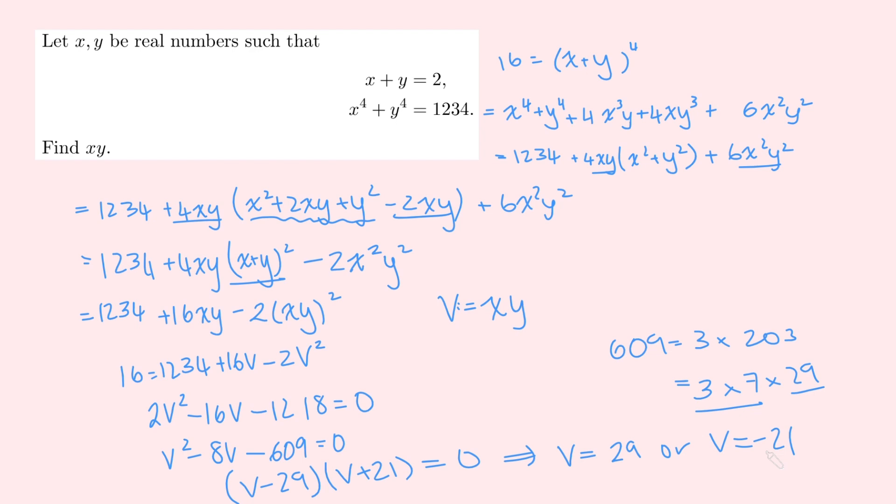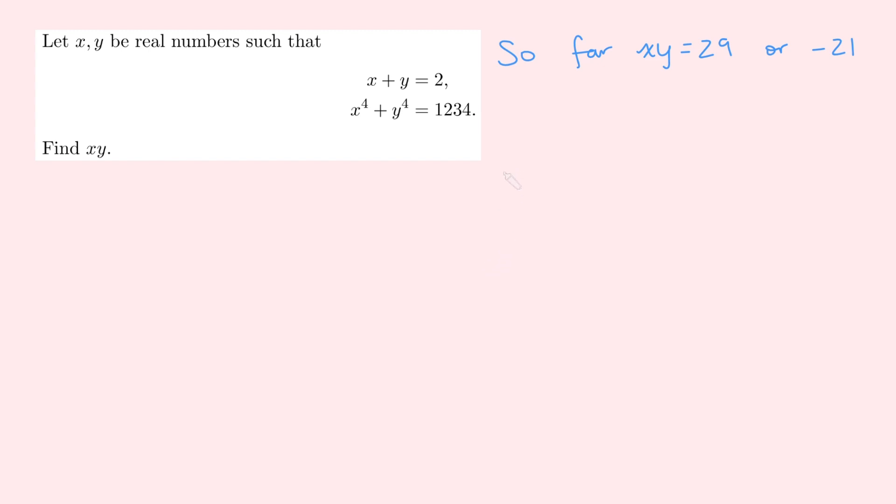And we can do this using a very nice trick. So the trick to this is to use the arithmetic mean geometric mean inequality when we have two variables. So this, remember, says that a plus b divided by 2 is bigger than or equal to the square root of ab. For any numbers, a and b at least 0.